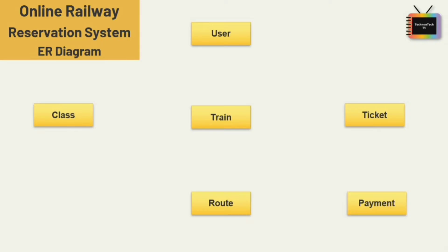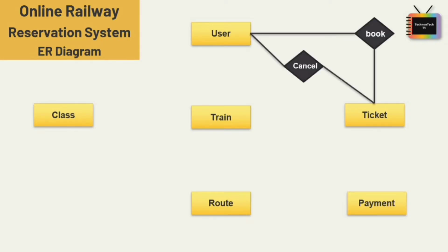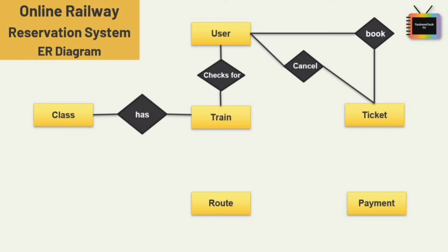Now let's define the relationships between all the entities. There will be two relationships between user and ticket: book and cancel — a user can book a ticket as well as cancel it. The next relationship between user and train is 'checks', because after booking the user checks for train information and also checks for seat availability at the time of booking.